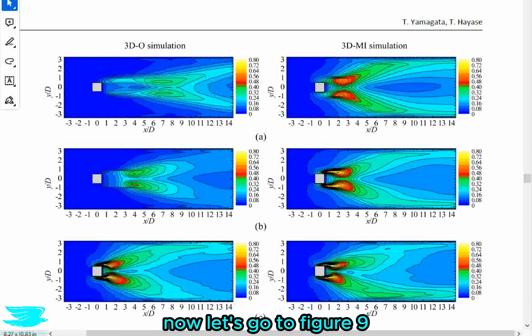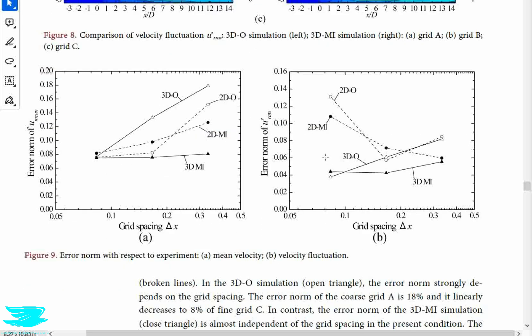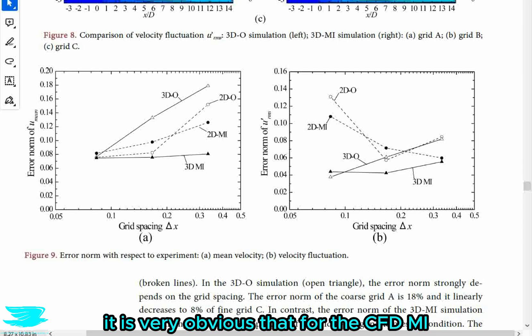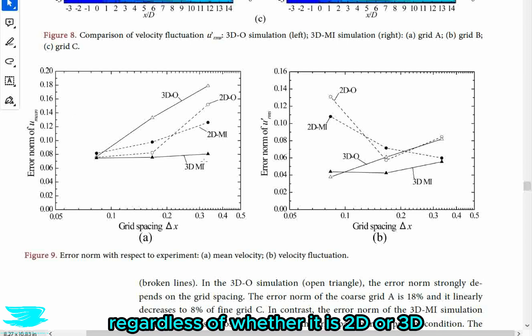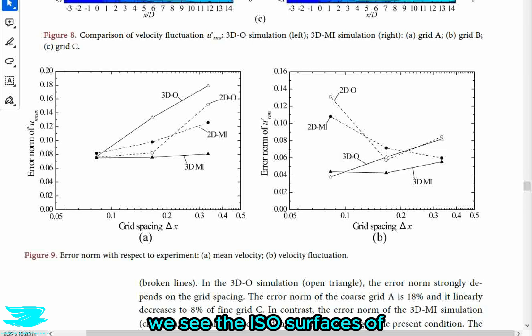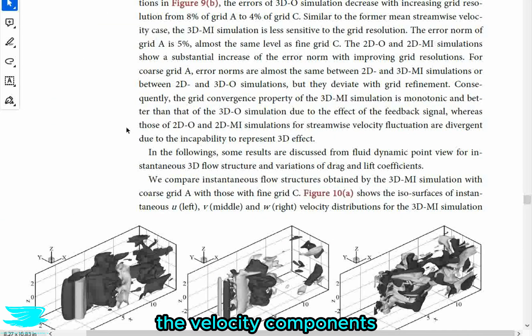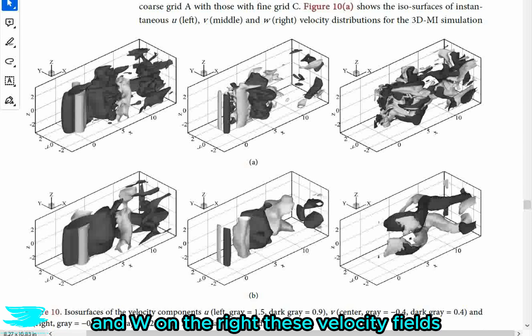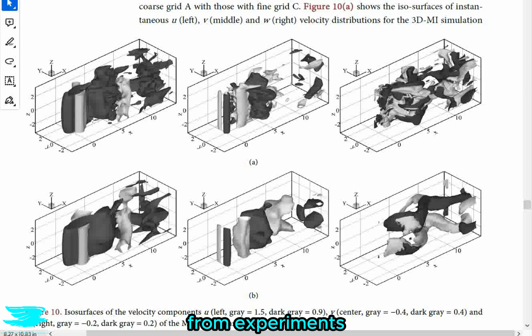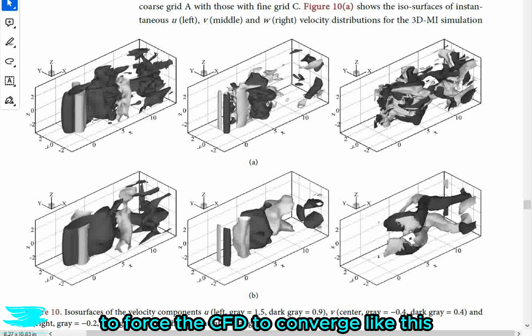Now let's go to figure nine, because we see the errors in the CFD compared to the experimental data for the regular CFD and the CFD MI with different spacings. It is very obvious that for the CFD MI, regardless of whether it is 2D or 3D, we have far fewer errors. The errors are far lower for these two compared to the regular CFD. And in figure 10, we see the isosurfaces of the velocity components U on the left, V in the middle, and W on the right. These velocity fields look very similar to what you'd typically expect from an experiment for a transient simulation. So to get such detail for a RANS simulation is impressive, and all with just a few points in the field to force the CFD to converge like this.